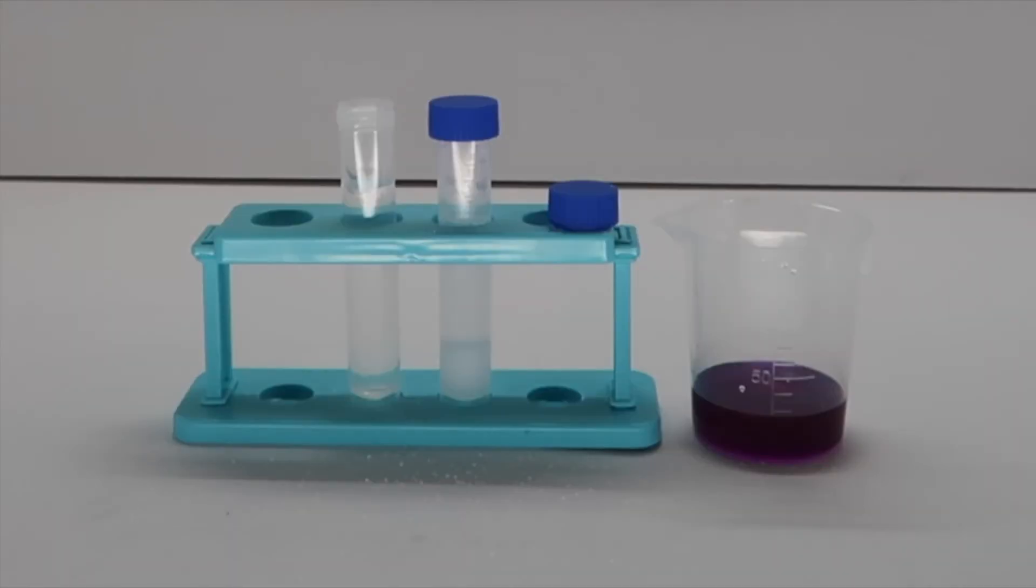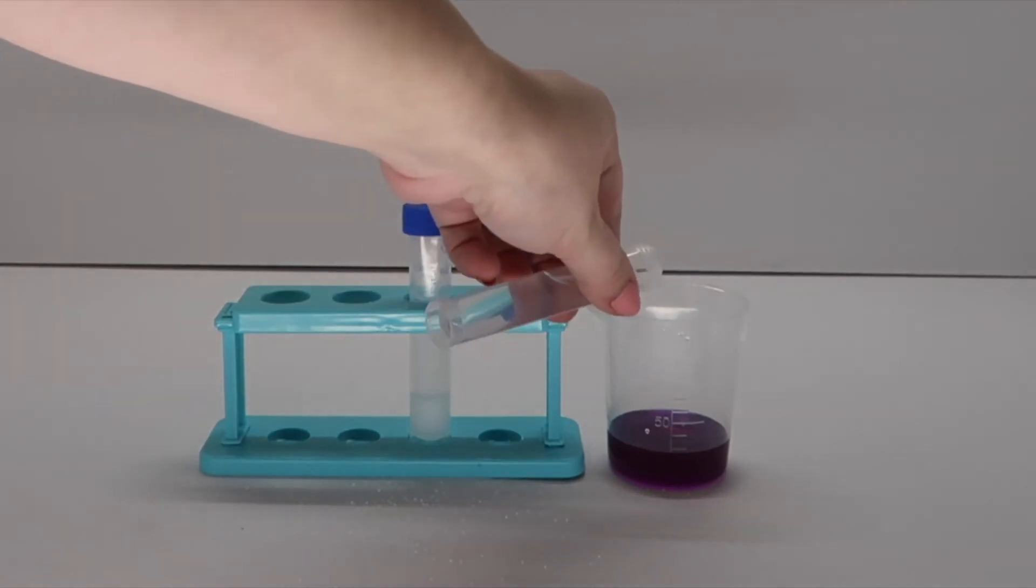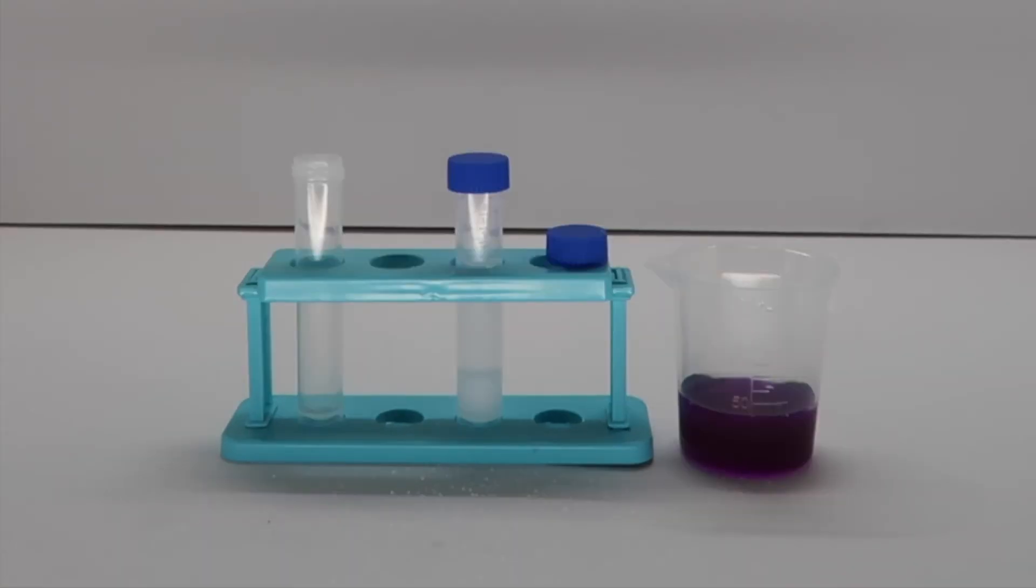Before you continue, observe the smell, texture, and color of the three mixtures you made. After you're done doing that, pour the test tube with water into the beaker with glue. Pour the test tube with the borax mixture into the beaker and stir.